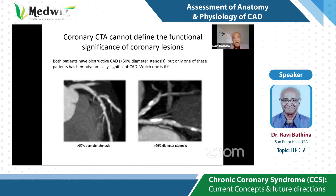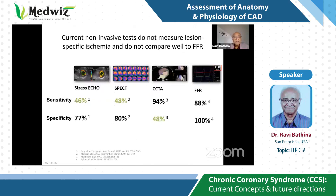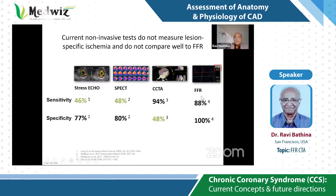Which one is it? As of now, we lean on doing non-invasive stress echo and SPECT scans, which have been in use for almost three to four decades. But because of limitations in temporal and spatial resolution, their sensitivity and specificity are suboptimal. At this point, we are stuck with invasive FFR, which has better sensitivity and specificity.